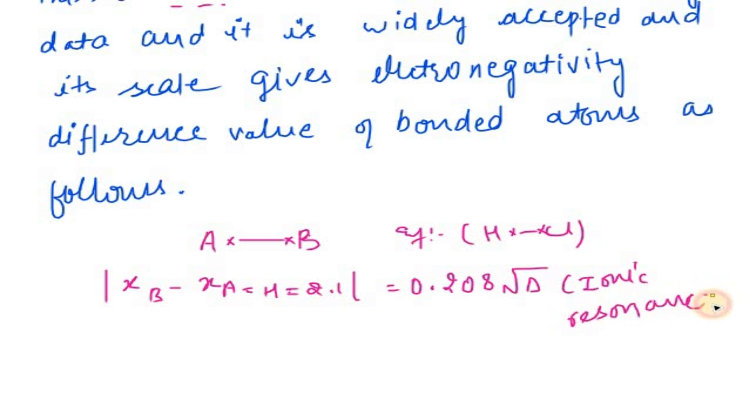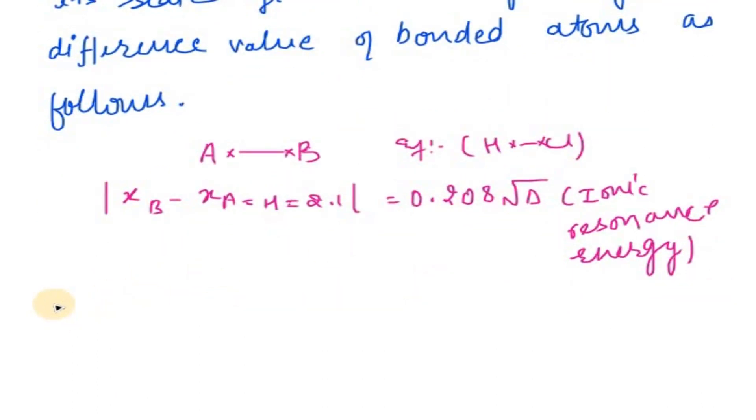XB minus XA equals 0.208 times the square root of delta. What does delta mean here? The delta value equals the bond energy of AB minus the square root of the bond energy of AA multiplied by the bond energy of BB.